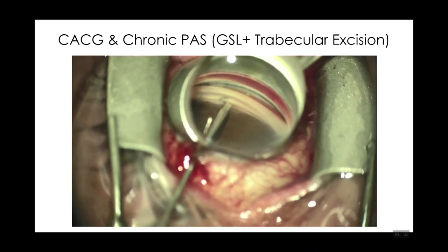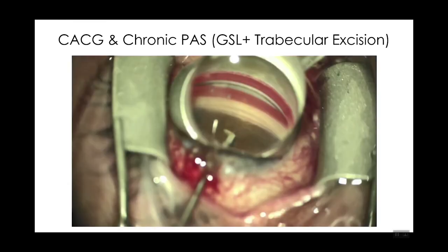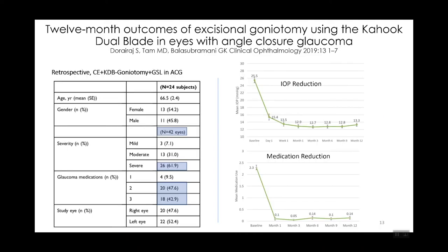As the blade pulls away from the canal, the strip of trabecular meshwork is wrapped around the ramp of the KDB and can be pulled out of the anterior chamber. We have publications in the public domain for any surgeon performing this procedure. A publication by Cyril Doria Raj shows significant IOP lowering from 25 to 13 and a decrease in medications from around 2.14. This represents a significant reduction in the two metrics we chiefly care about — IOP and medication burden.